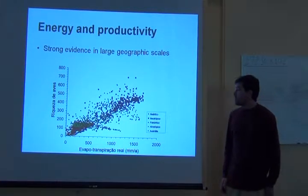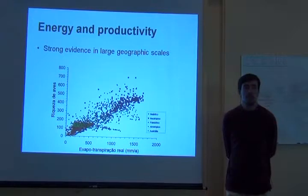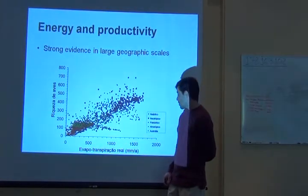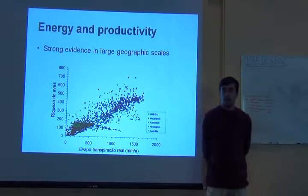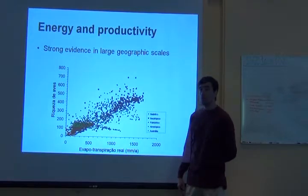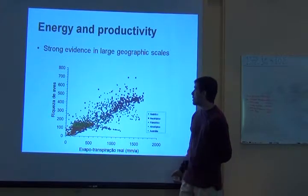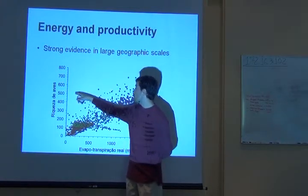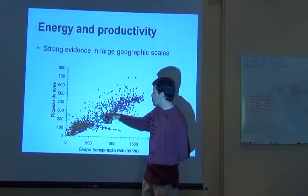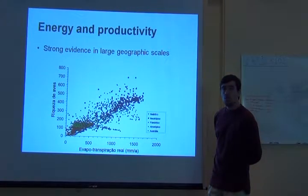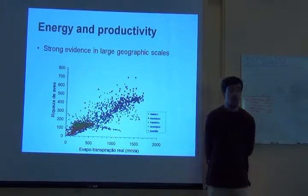There is very strong empirical evidence that productivity is correlated with species richness. Actual evapotranspiration, or AET, is strongly correlated with species richness of birds. Every point in this chart is a site, and for each particular site we have the number of species of birds that live in that place — for example, 500 — and the amount of evapotranspiration. There is a very clear trend of increasing species richness as you increase evapotranspiration. Evapotranspiration is potentially a measure of primary productivity.